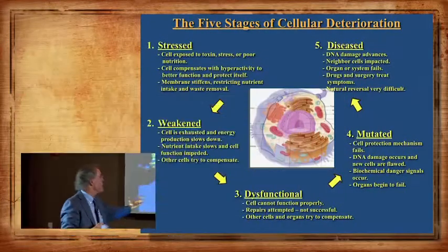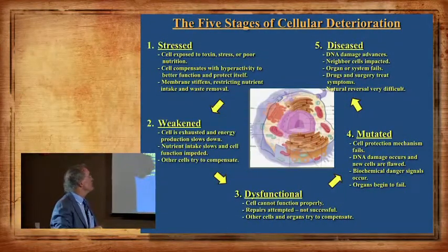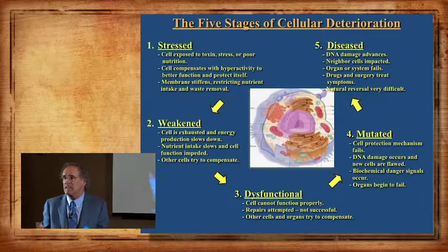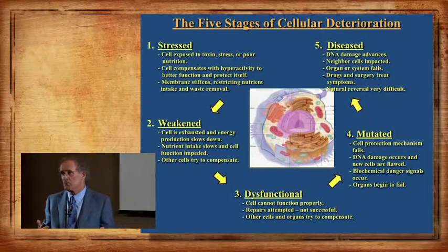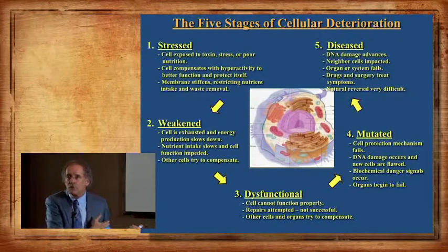If the cell stays dysfunctional for too long, the nucleus of the cell becomes damaged. Now you have a mutated cell. If it's mutated, that means when it goes to replace itself, it can't replace itself with a healthy version — it replaces itself with another mutated version of itself. And if it stays in that state too long, it goes to diseased. Once it gets in a diseased state, it's nearly impossible for it to recover back to its normal state.